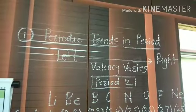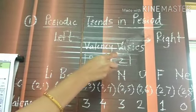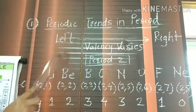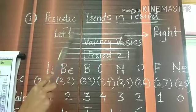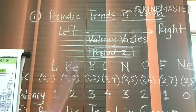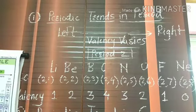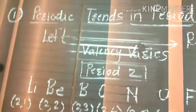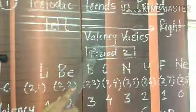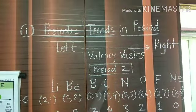Let's see the periodic trends in the period. We see in the last lecture that while going from left to right, the atomic number increases, so valence electrons also increase by 1. The valence varies while going from left to right in the period.